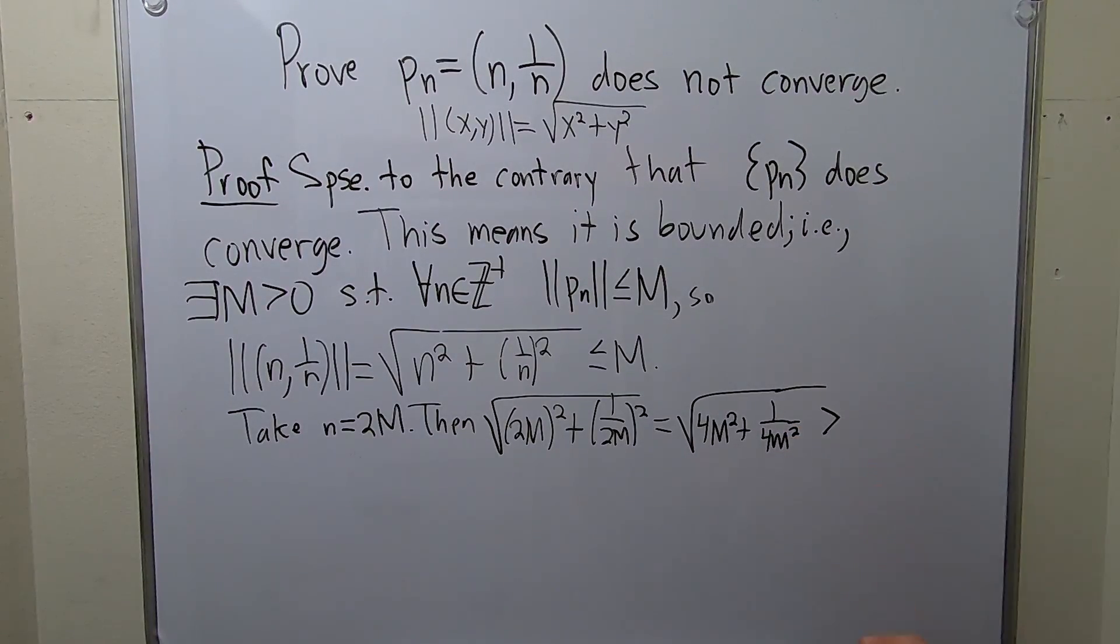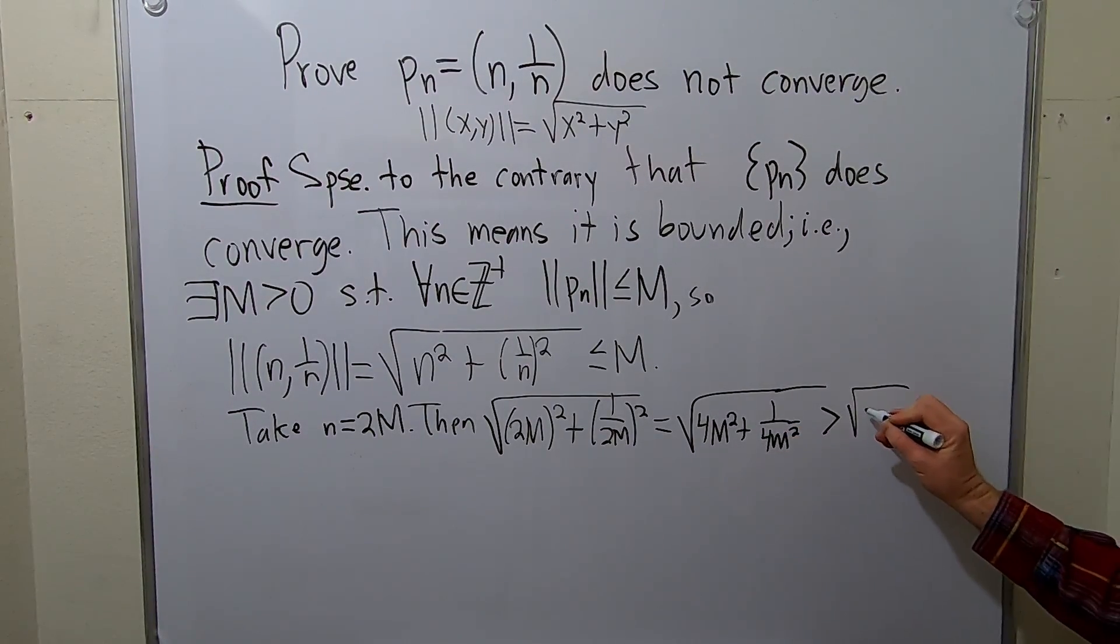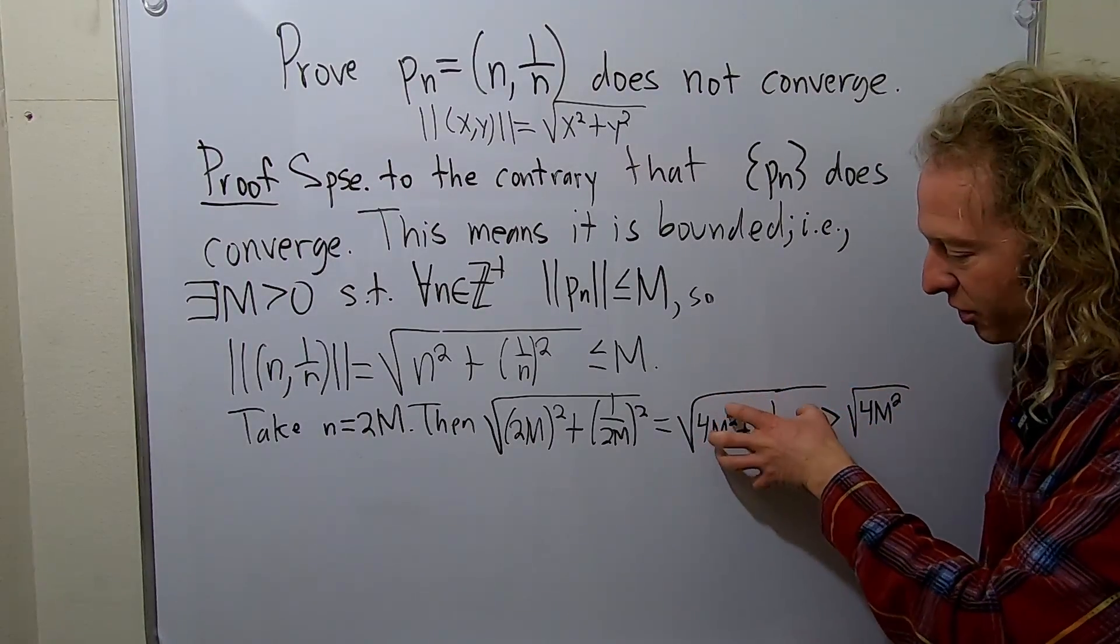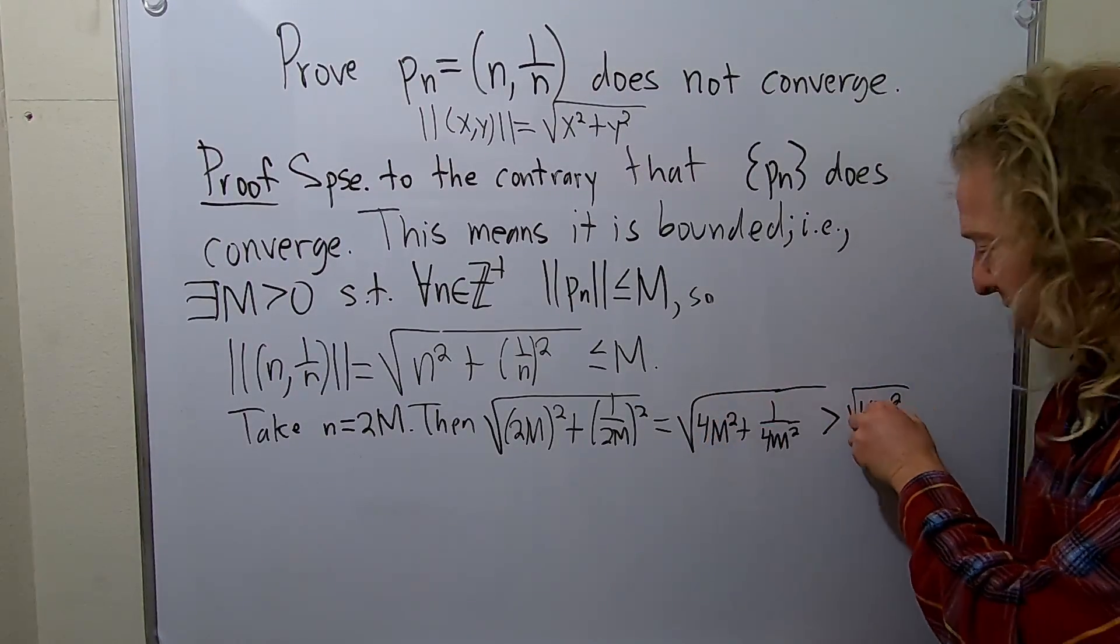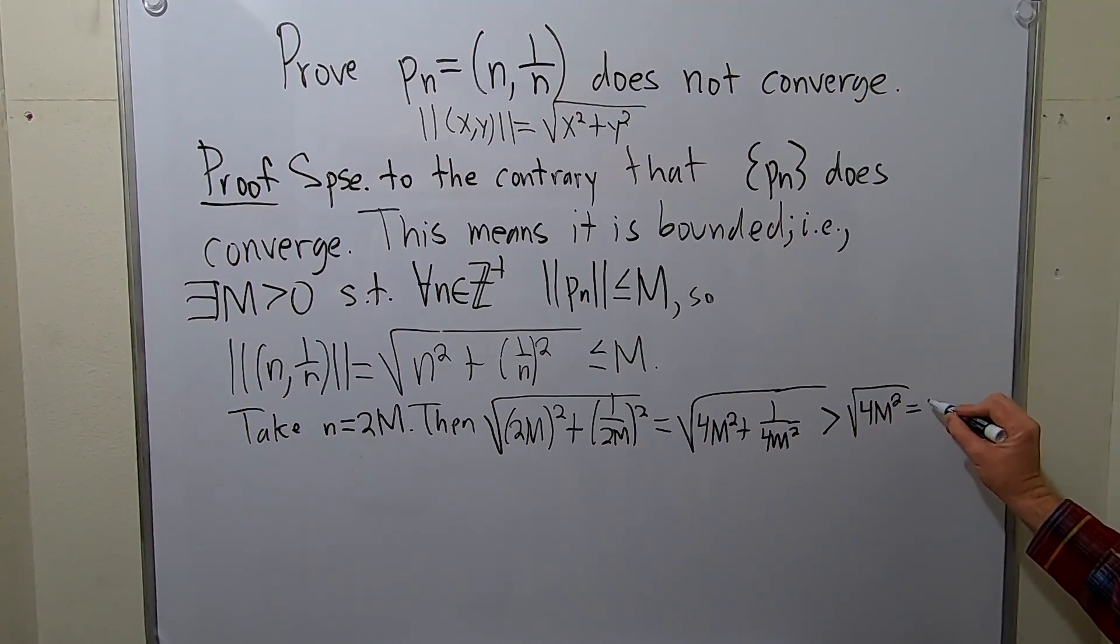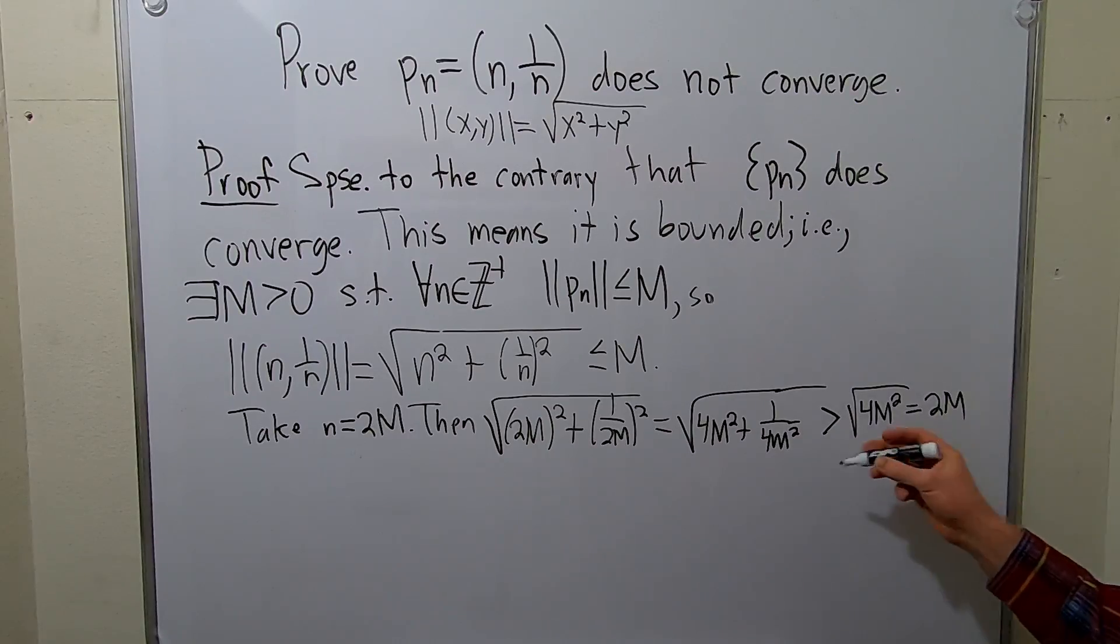Well, this is certainly bigger than the square root of 4m squared, right? Because this is bigger than this because this number in the square root is bigger than this number. And so this is actually equal to 2m, right? Taking the square root of each.